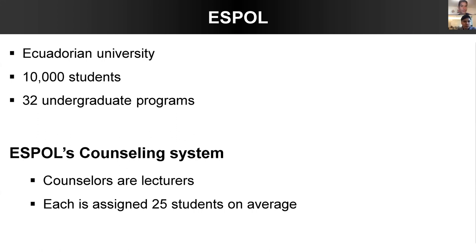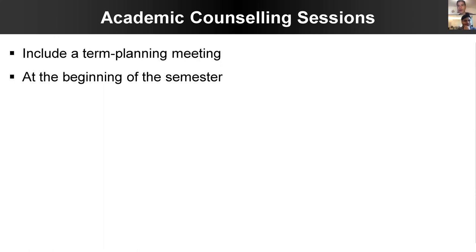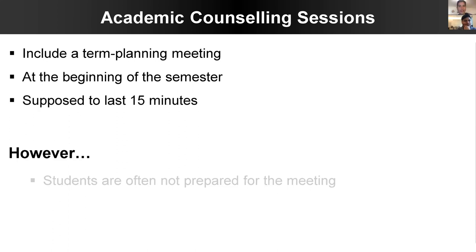The counselors meet the students twice per semester. The first meeting, which happens at the beginning of the semester, is dedicated to term planning and is supposed to take 15 minutes on average. However, in reality, it takes much longer.